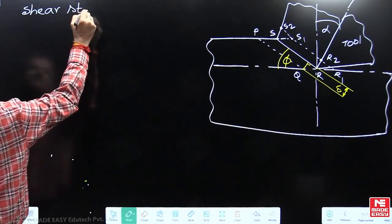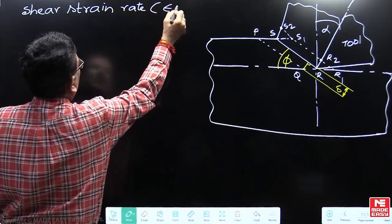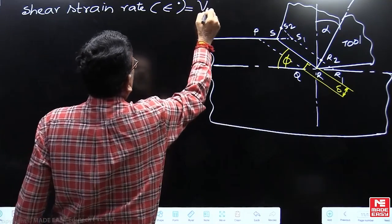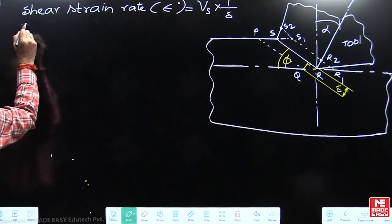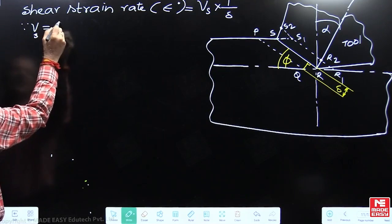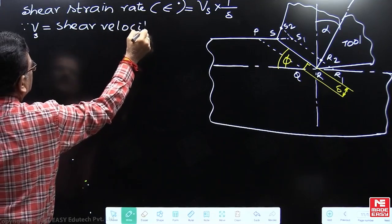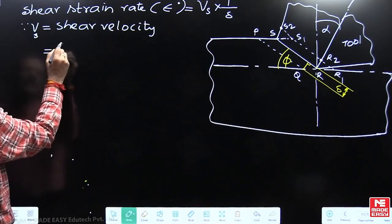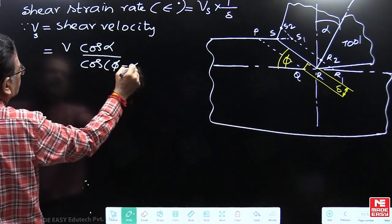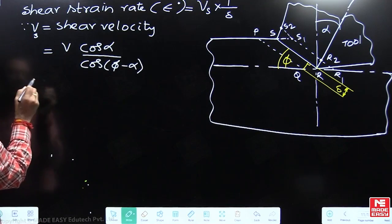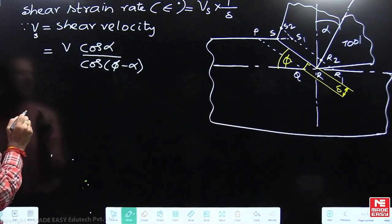How do you calculate the shear strain rate? There is a mathematical model that we come across. Shear strain rate epsilon dot is given by Vs into 1 by delta, where Vs is known as shear velocity. This shear velocity is given by the formula V cos alpha divided by cos phi minus alpha. This alpha value, phi value, V, they are all given in the question.